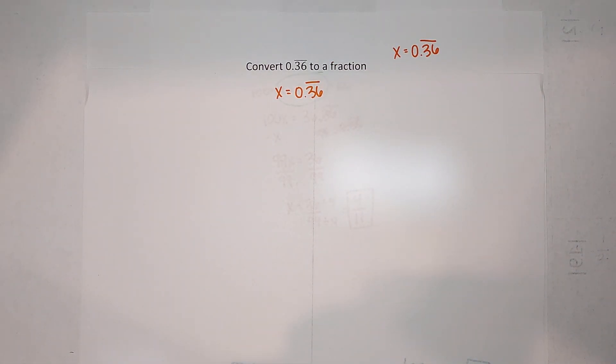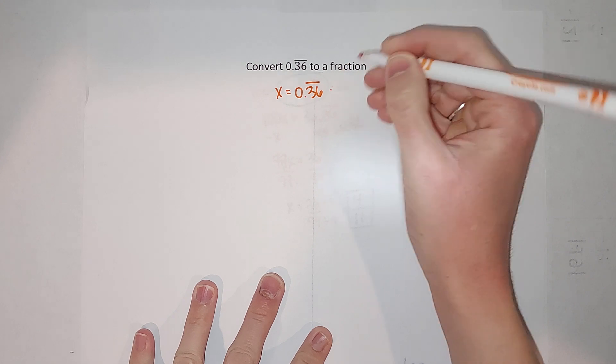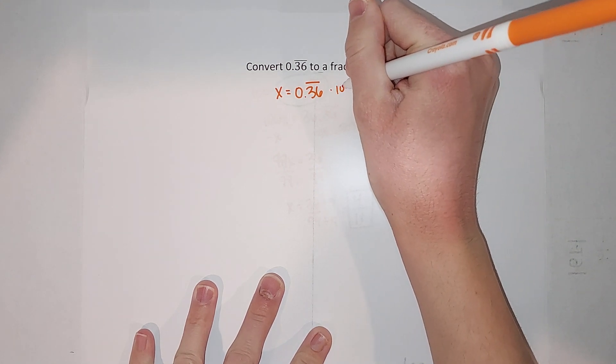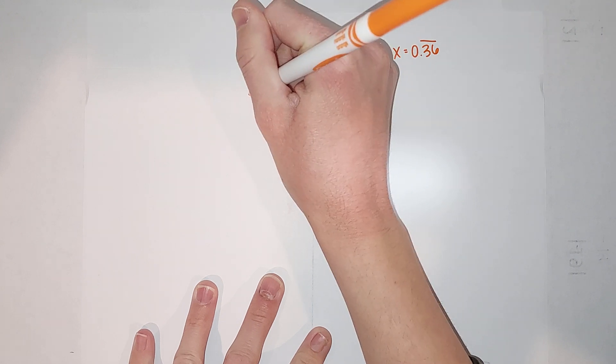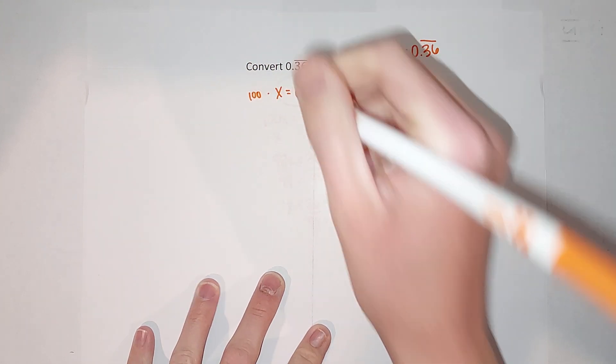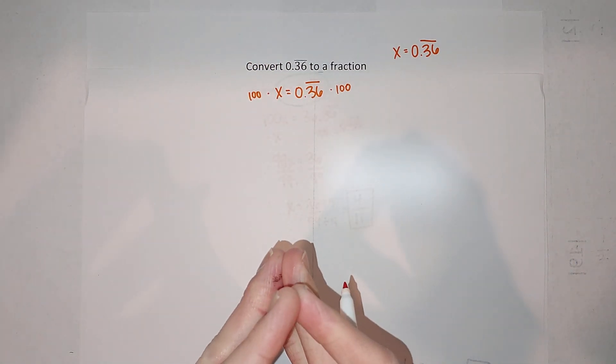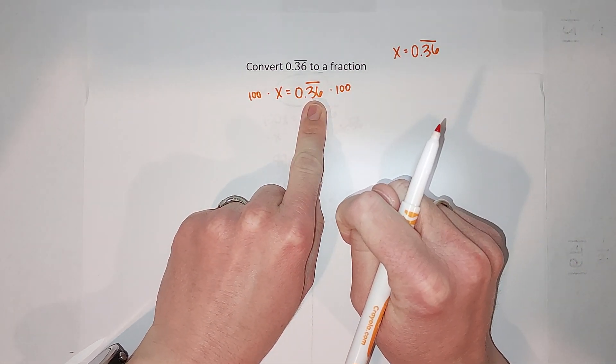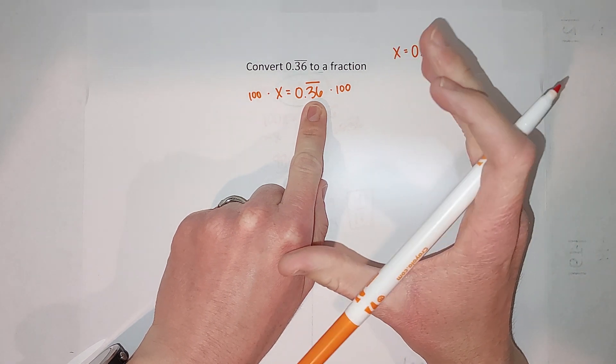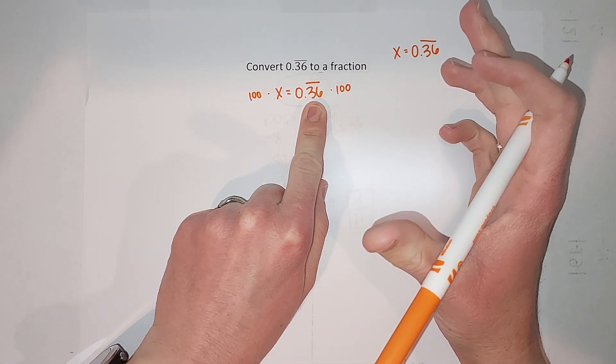Now the next thing I'm gonna do, and hang with me if you're like why is she doing that, is I'm going to multiply both sides by 100. And this is where if you have watched some of the other videos it might differ a little bit. The reason I'm multiplying by 100 is because there are two numbers repeating. When there's only one number repeating, you just multiply by 10.